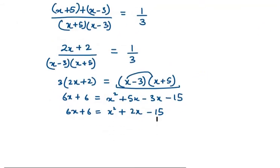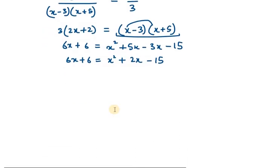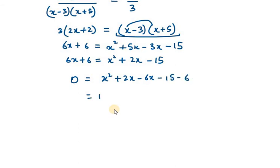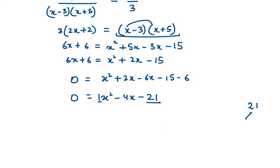We still need to simplify because we have both X terms and numerical terms. Bringing everything to the right-hand side: X squared plus 2X minus 6X minus 15 minus 6, which gives X squared minus 4X minus 21 equals 0.